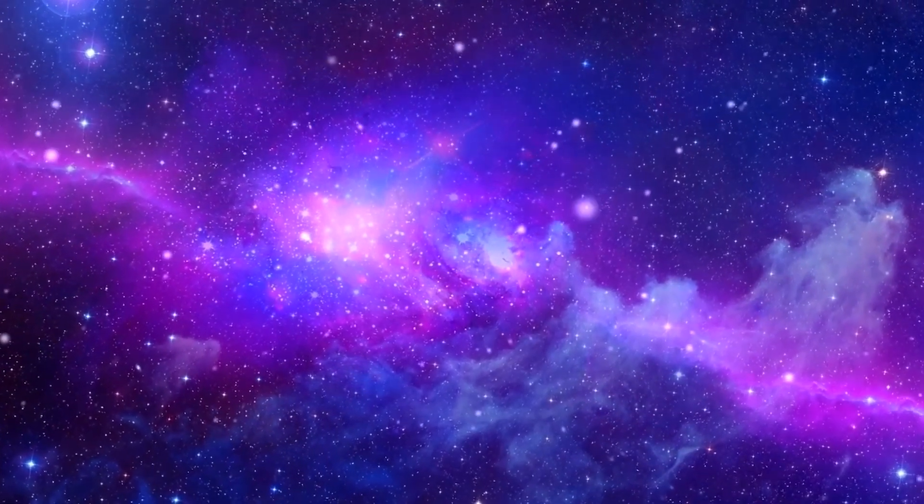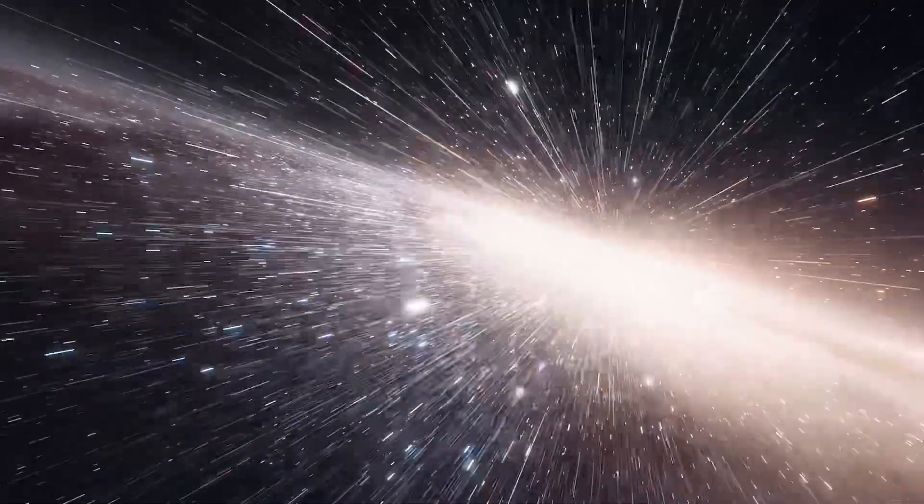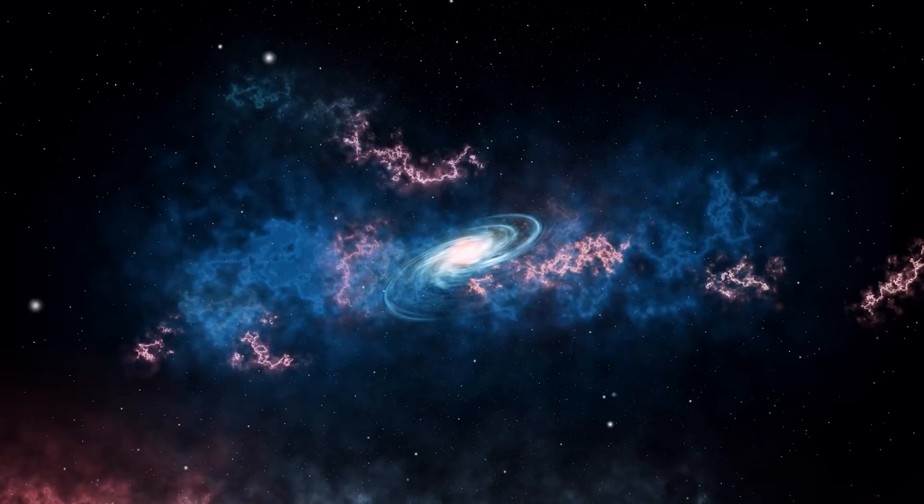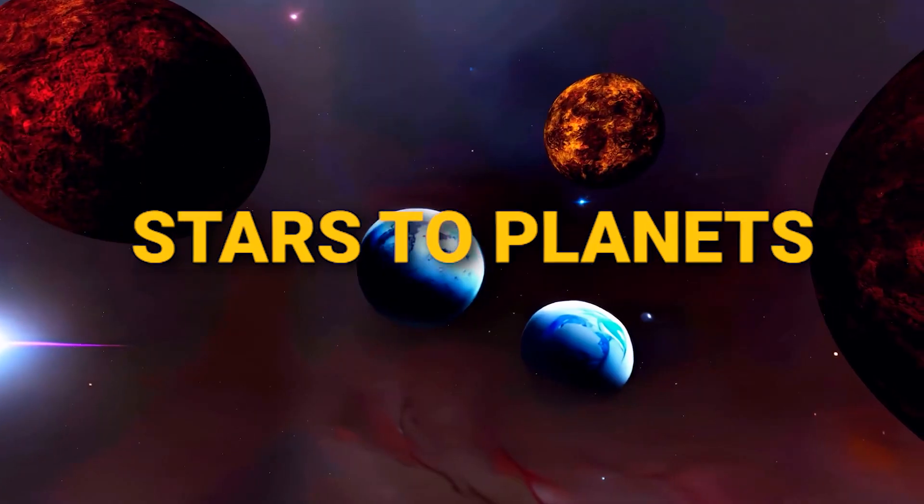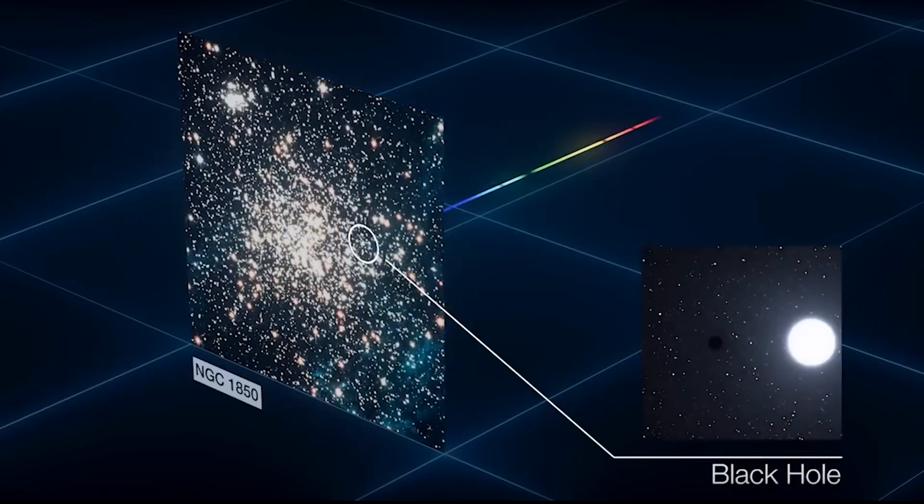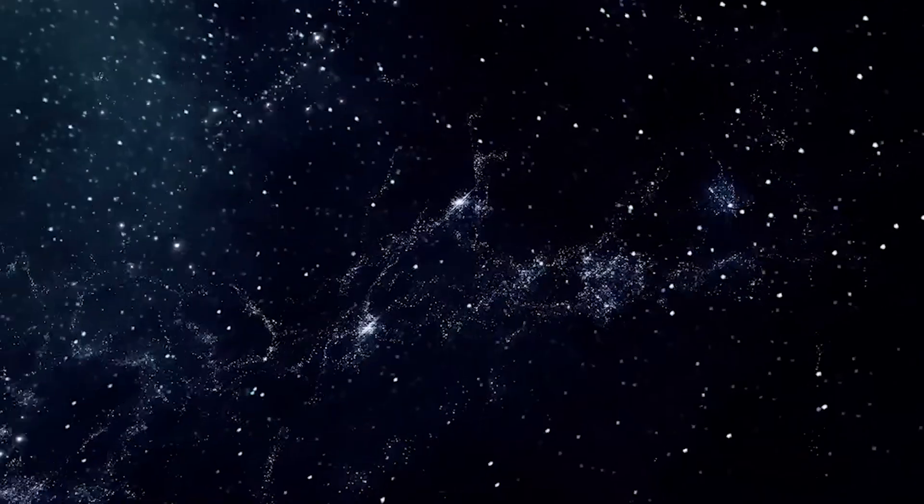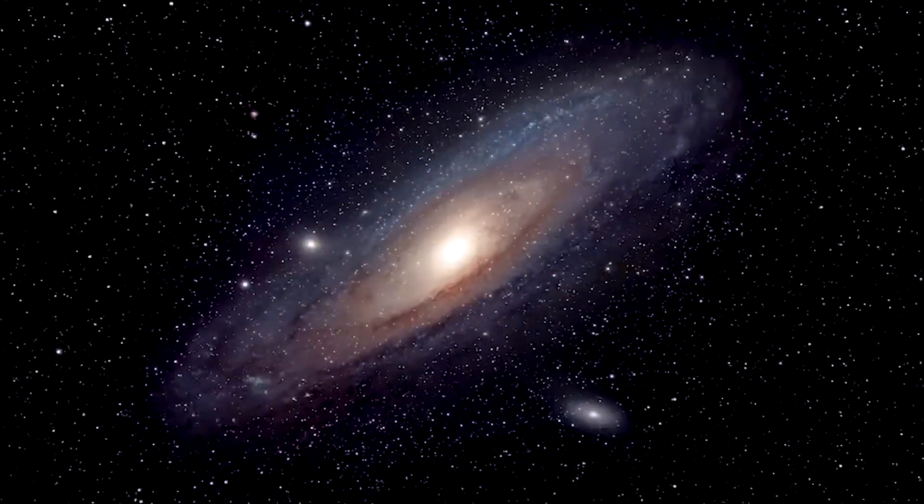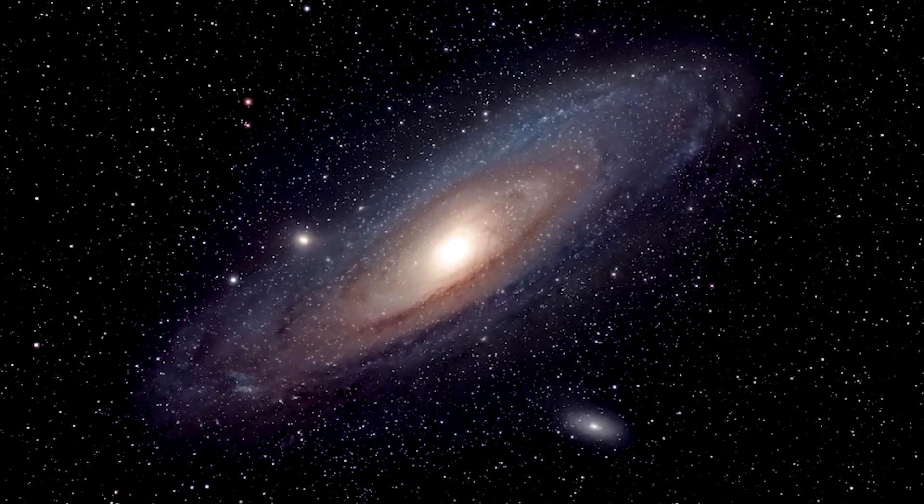This means that the observable universe spans about 93 billion light years, give or take a few. The observable universe encompasses everything we've detected, from quarks to quasars, stars to planets, nebulae to black holes. But there's a catch: it only contains what we've seen so far.